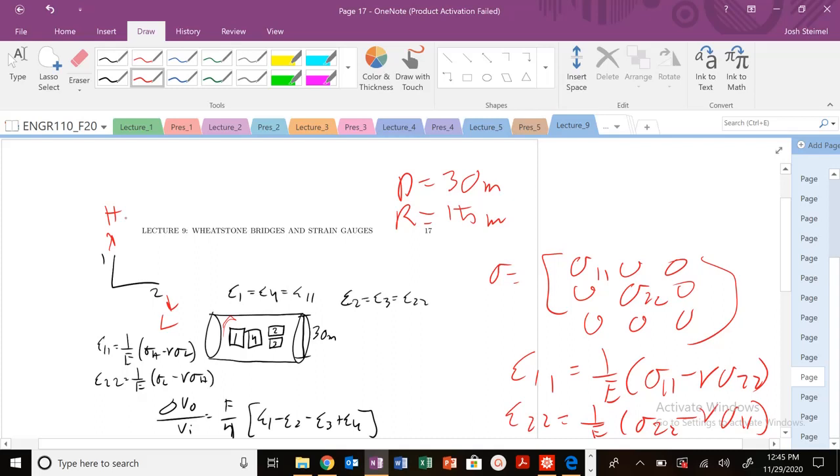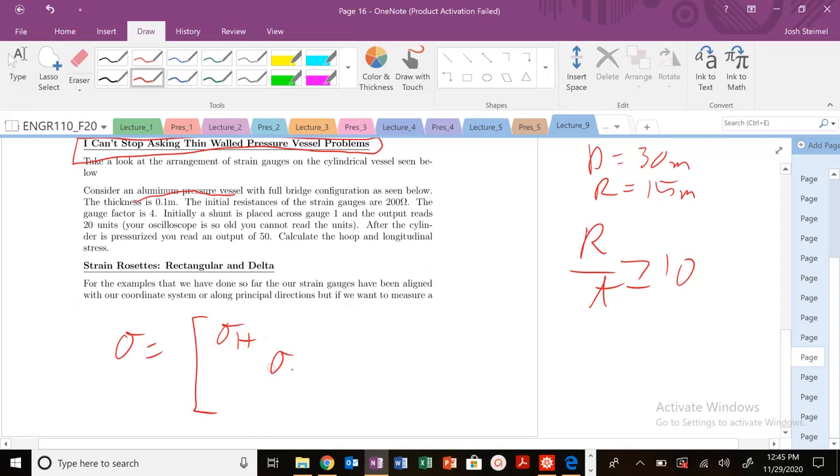But we know that we're working with hoop and longitudinal stress. So really, the equation that we want to write is just a substitution. Our stress tensor for thin-walled pressure vessels is going to be, given that coordinate system, this. Same exact solution, but we're just changing 1s and Ls.